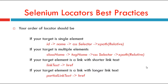Your order of locators should be: if the target is a single element, go for ID, name, CSS selector, or relative XPath. If your target is multiple elements, go for class name, tag name, CSS selector, or relative XPath.